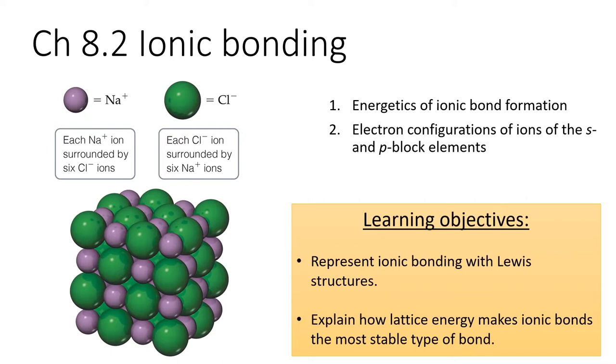When cations attract anions, we form an ionic bond. Many ionic bonds together form a three-dimensional ordered arrangement of ions called a crystal lattice. The charge difference between cations and anions make ionic bonds the strongest of all types of bonds. We have a term called lattice energy which indicates the strength of an ionic bond.